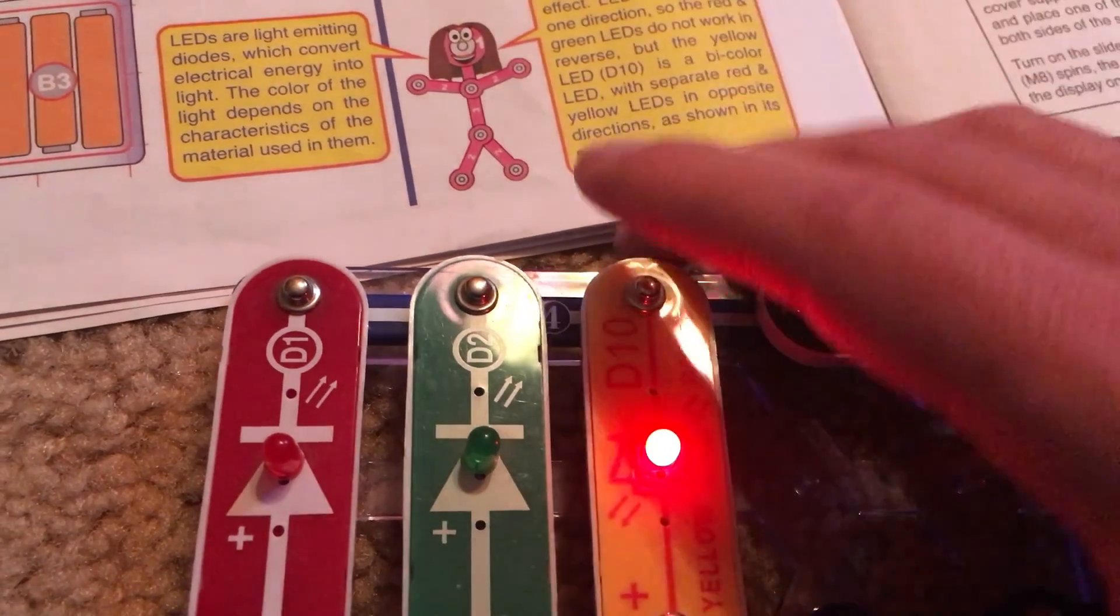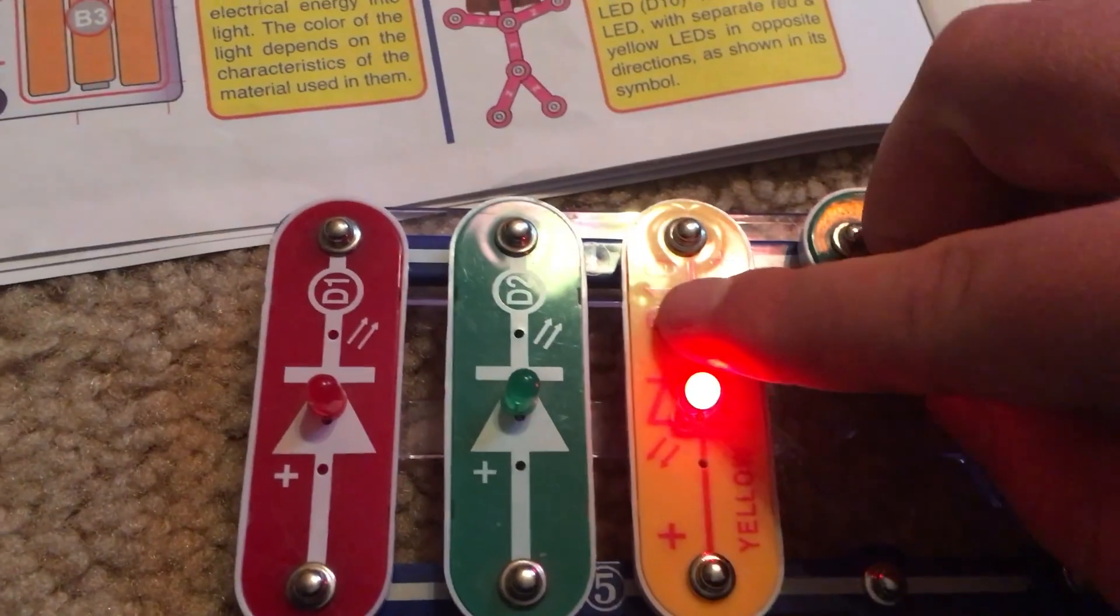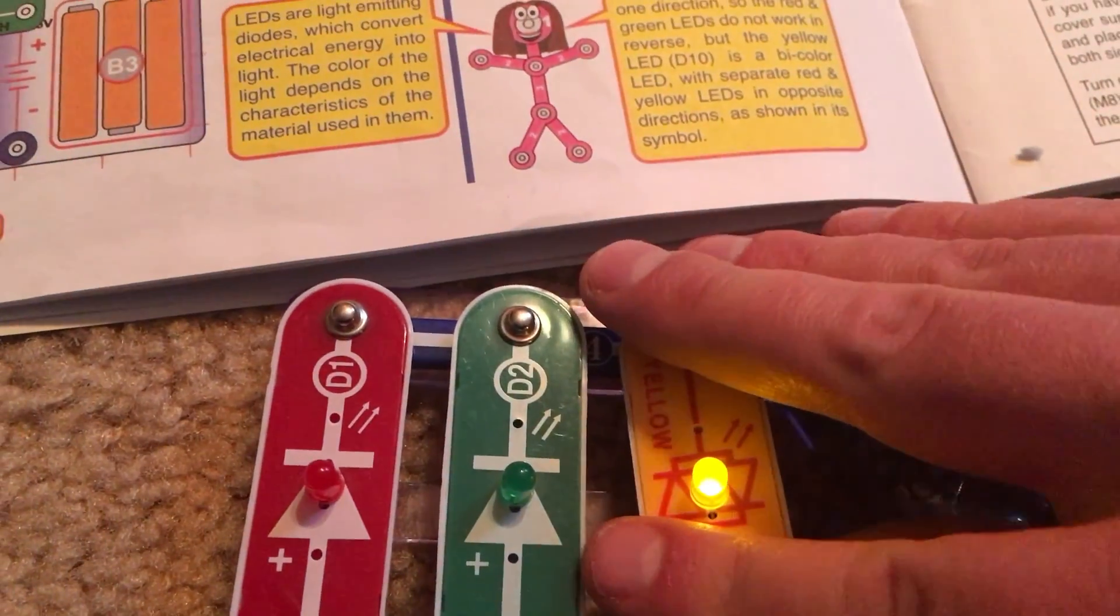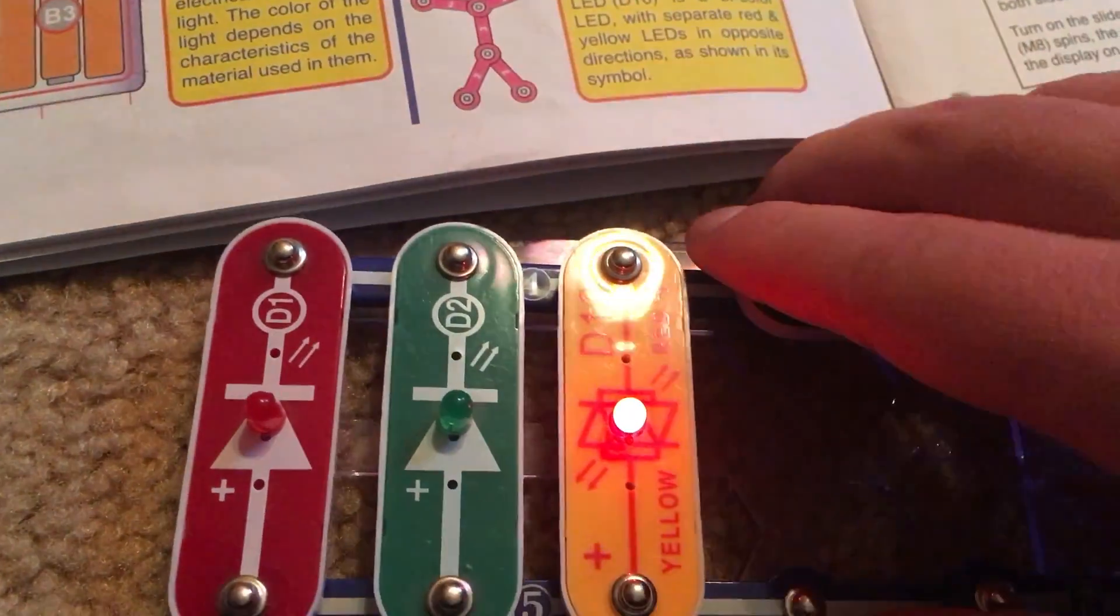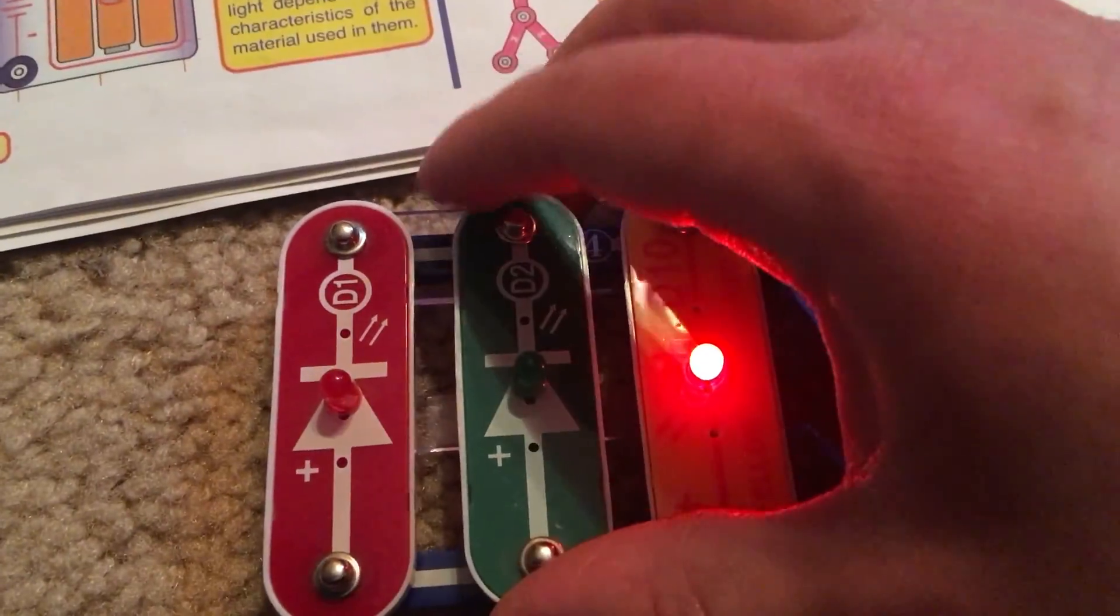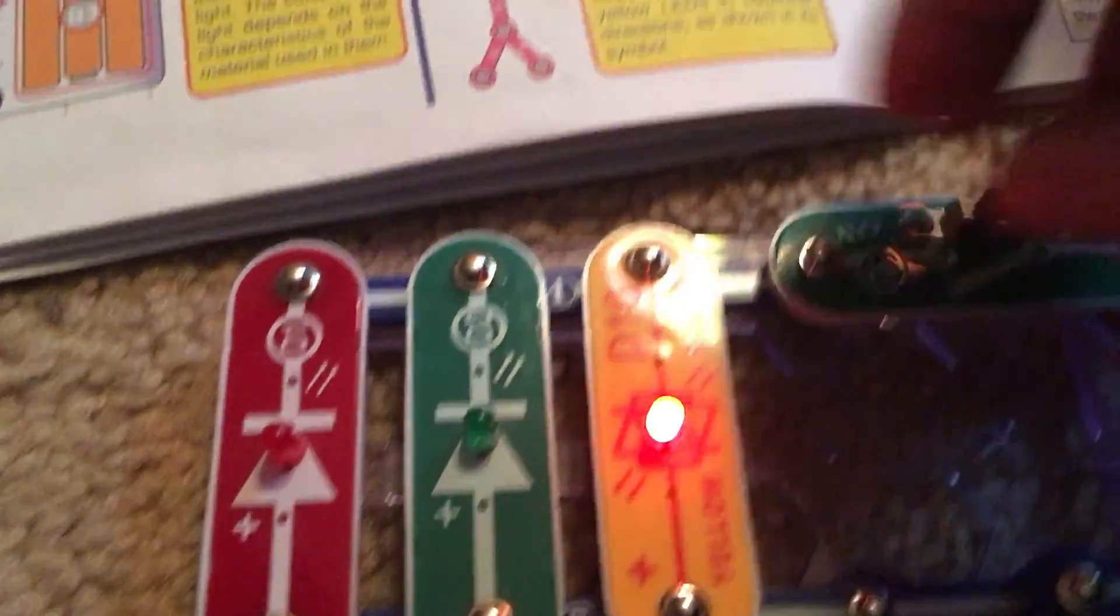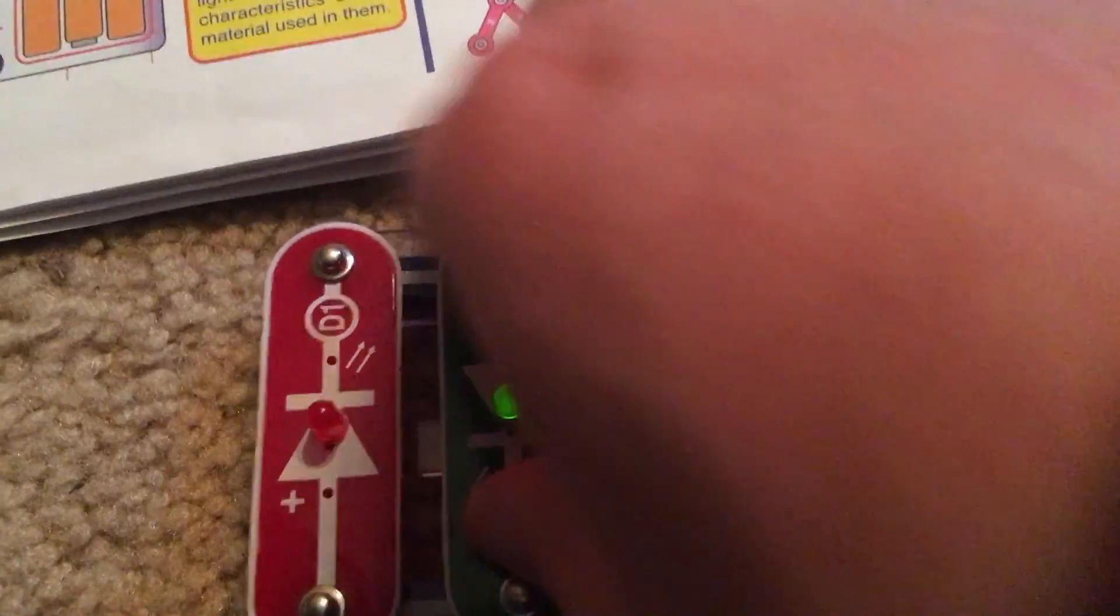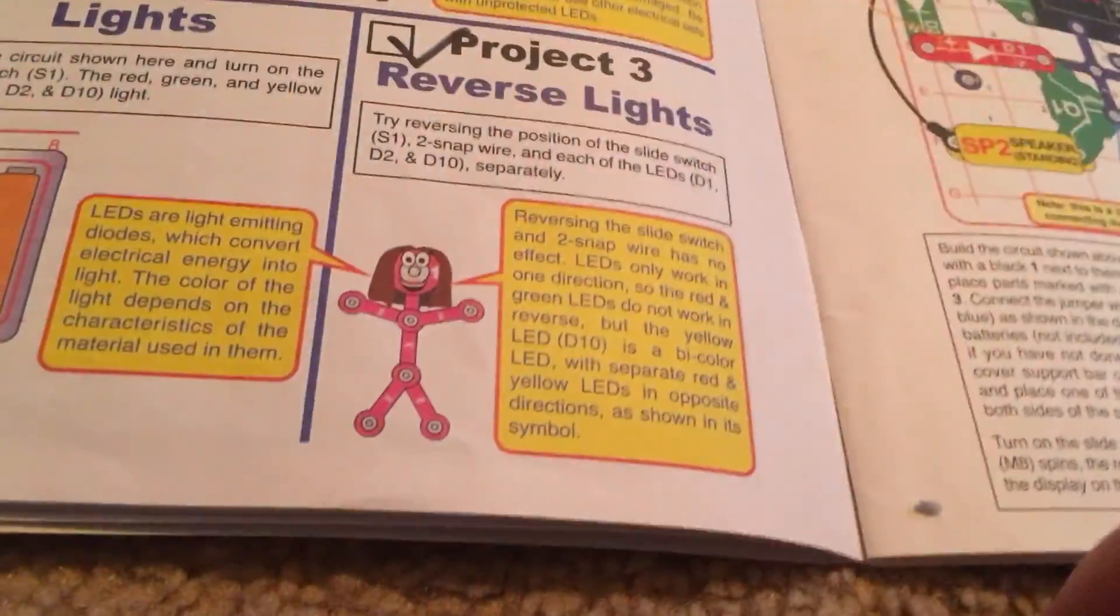They are also wired in the opposite direction, so when this is placed in one direction, the yellow LED will light up, but when it is placed in the opposite direction, the red LED will come on. The D1 and D2 LEDs are single lamps, so they will not light up when they are placed in the wrong direction. When you turn them around, they come back on. And that is Project 3.